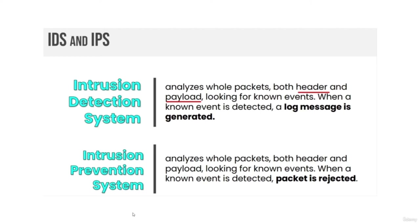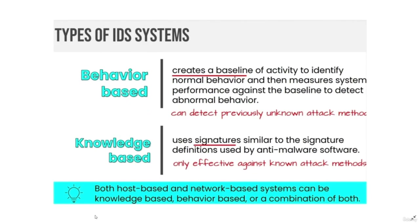Intrusion detection systems (IDS) analyze whole packets — both header and payload — looking for known events. When a known event is detected, a log message is generated. Intrusion prevention systems (IPS) also analyze whole packets for known events, but when a known event is detected, packets are rejected. Types of IDS systems include behavior-based and knowledge-based. Behavior-based IDS creates a baseline of activity to identify normal behavior and measures system performance against it to detect abnormal behavior — it can detect previously unknown attack methods. Knowledge-based IDS uses signatures similar to anti-malware software and is only effective against known attack methods. Both host-based and network-based systems can be knowledge-based, behavior-based, or a combination of both.